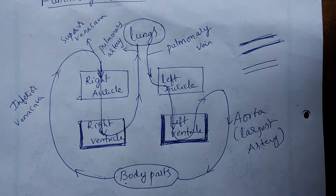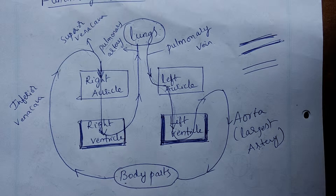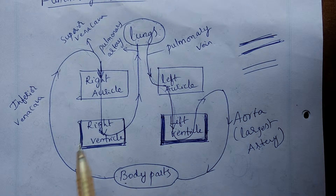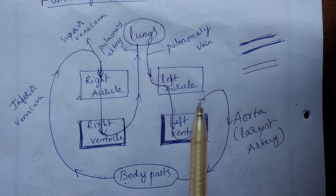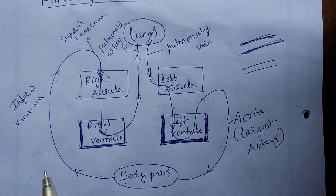First of all, heart is very important. There are four chambers: two chambers on the right, two chambers on the left. The chambers are the auricle and ventricle.